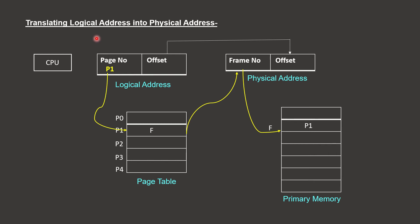We have to execute these pages in the CPU. When the CPU fetches a process, it generates a logical address. The primary memory uses a physical address. So the logical address must be translated into a physical address to fetch the data from primary memory.